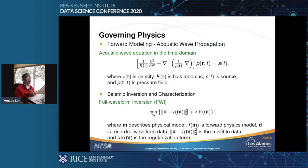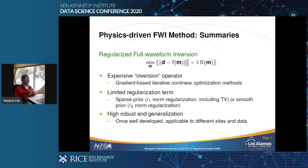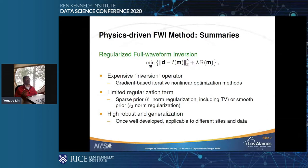The challenges come from three areas. First, solving for the problem is expensive — this is a non-linear problem requiring many iterations. Second, regularization can be limited; we're only looking at L1 or L2, and choosing between them is hard. Third — and this is actually a positive — physics-based inversion is robust, meaning a good algorithm may be applied to other cases as well.